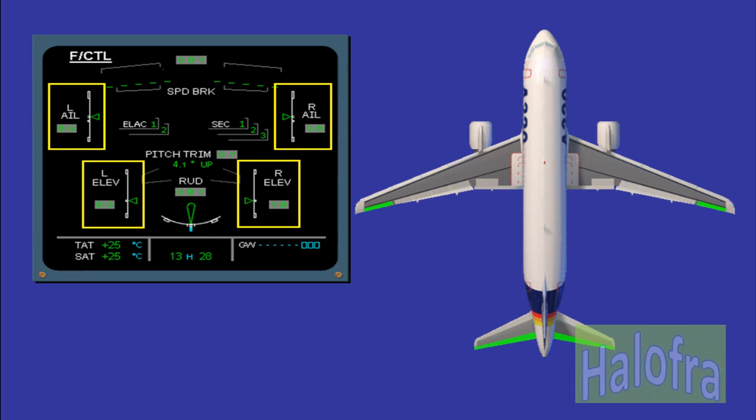The ailerons are shown in neutral position. The indication below corresponds to the new neutral position when the flaps are extended — aileron droop automatic function. In case of elevator failure, the deflection of the remaining elevator is limited by the computer to avoid excessive asymmetrical loads on the horizontal tail plane or rear fuselage.